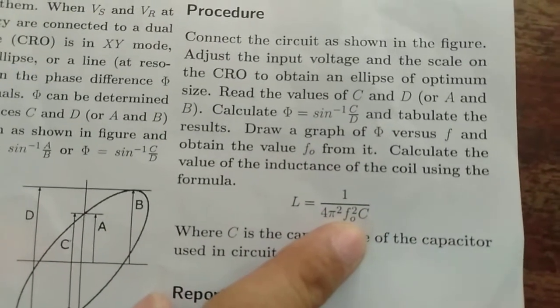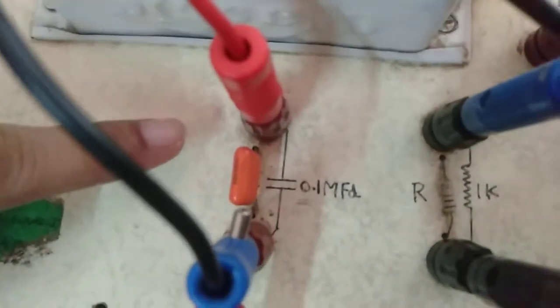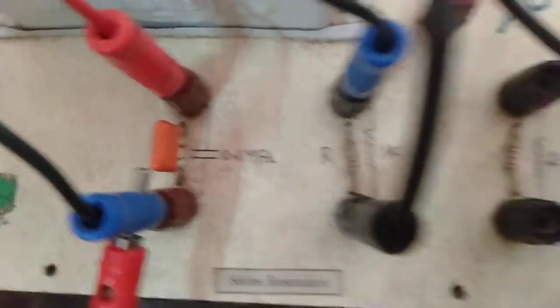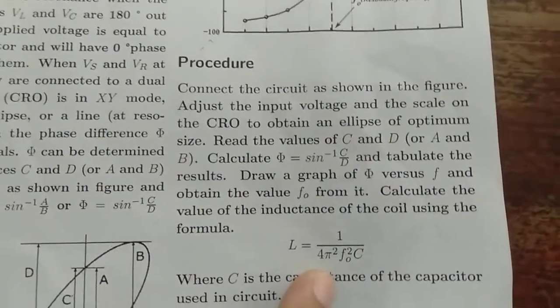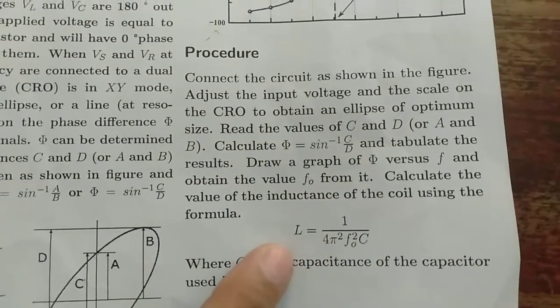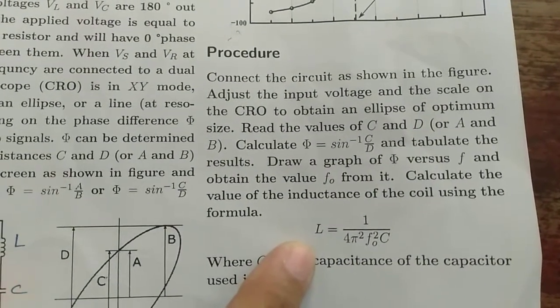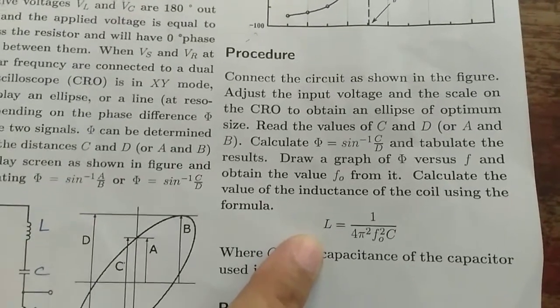C is the capacitance of the capacitor used in the circuit. Here, the value of capacitance used is 0.1 microfarad. So, substituting the value of the capacitance and the resonant frequency will get the value of the inductance included in the circuit which comes around 0.7 henry.